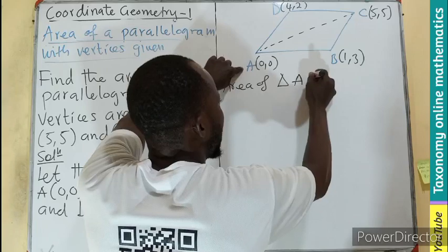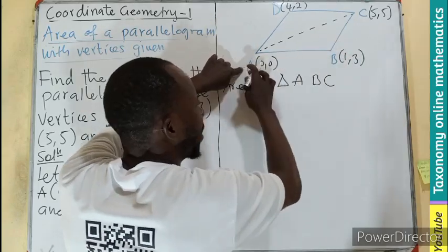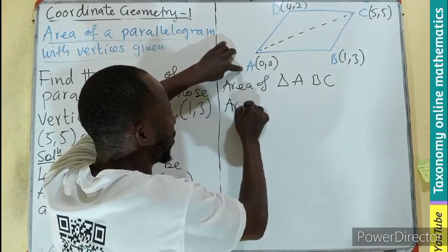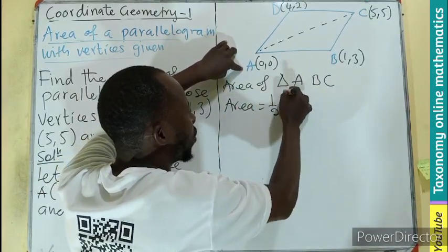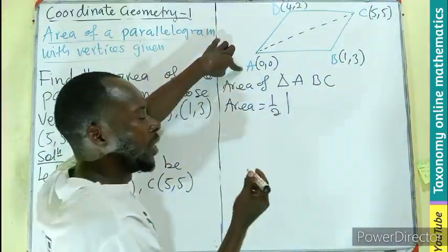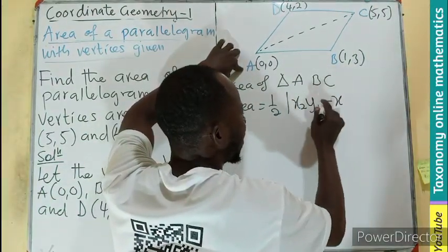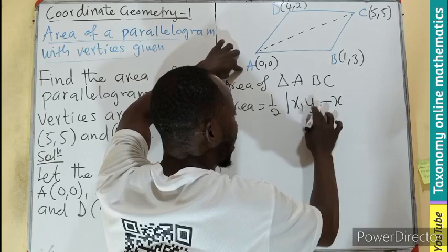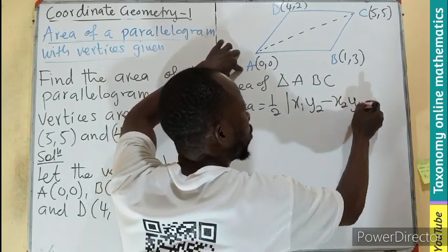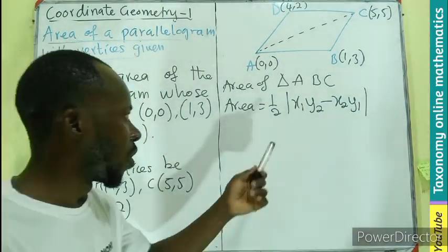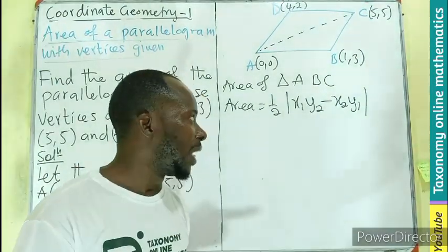I'll begin with the area of the first triangle ABC. Area equals—recall the formula we derived was x1 times y2 minus x2 times y1. Either way will be correct because you're having an absolute value.